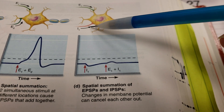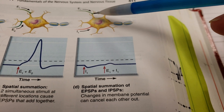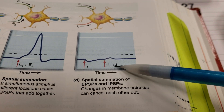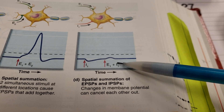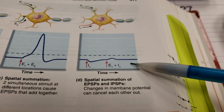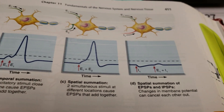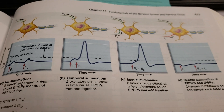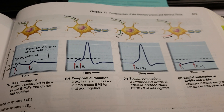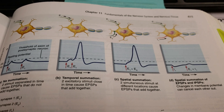Remember that graded potentials aren't always excitatory — sometimes they can be inhibitory. So if we have spatial summation where one potential is excitatory and another is inhibitory, they will effectively cancel one another out. After that occurs, the sodium-potassium pump reestablishes the resting membrane potential. That's how graded potentials occur and how they can affect the neuron — either generating an action potential or inhibiting one, depending on whether they are excitatory or inhibitory.